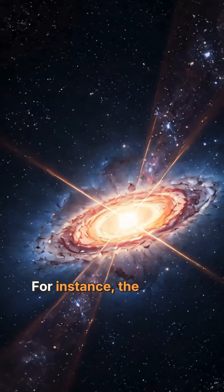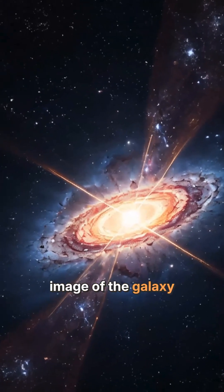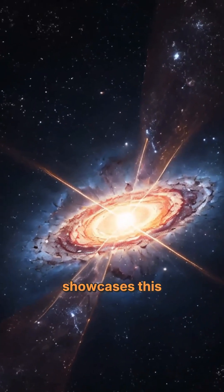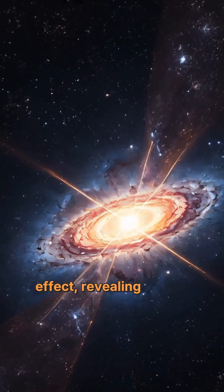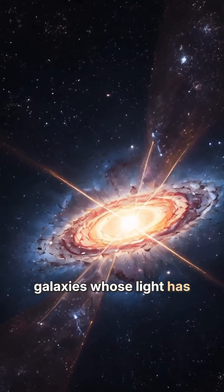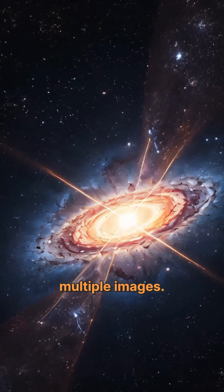For instance, the JWST's image of the galaxy cluster El Gordo showcases this gravitational lensing effect, revealing distant galaxies whose light has been bent into arcs and multiple images.